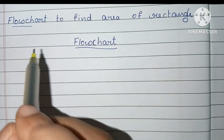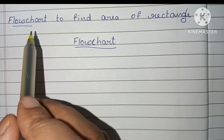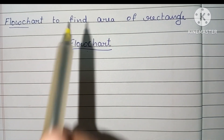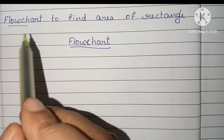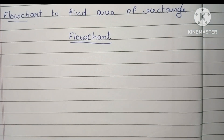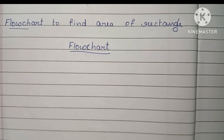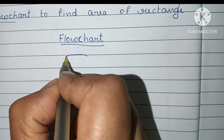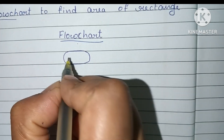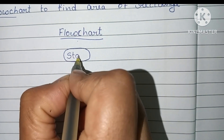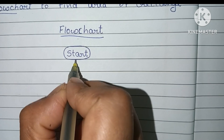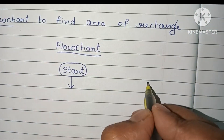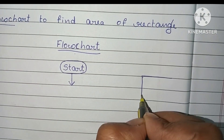In this video we are going to learn how to write a flowchart to find the area of a rectangle. A flowchart is a graphical representation of a solved problem. A flowchart always starts with the start statement, which is written within an oval shape.